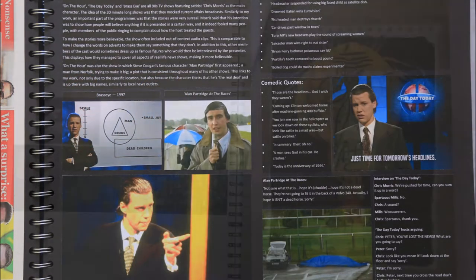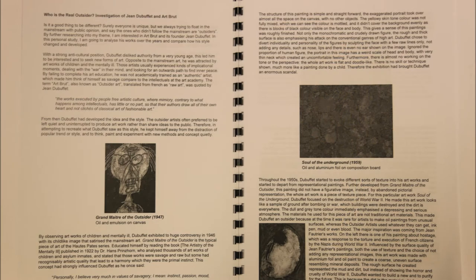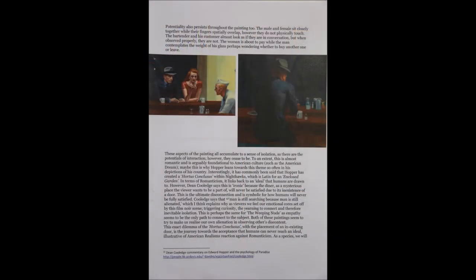Thirdly, and importantly, students should be able to analyse specific individual artworks and gain insights into artistic intention through their analysis of the formal elements of composition, colour, line, tone, etc., rather than making simply broad generalisations about an artist's work. Two examples are shown here looking at Dubuffet and Hopper, and we'll come back to these in a little bit more detail later on in the video to see how this can be done in practice.